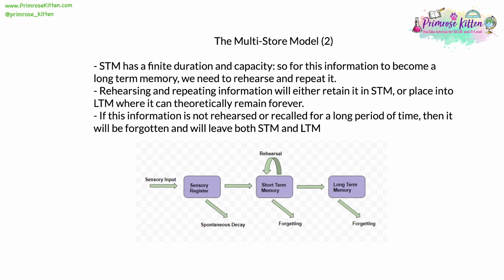Short-term memory has a very finite duration and capacity — it can only hold a small amount of information for a small amount of time. For information to become a long-term memory, we need to rehearse and repeat it. Rehearsing and repeating information will either retain it in short-term memory, keeping it looping around, or place it into long-term memory where, at least theoretically, it can remain forever. If not rehearsed, it will be forgotten and leave our memory entirely.